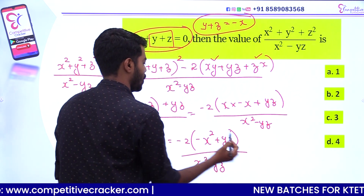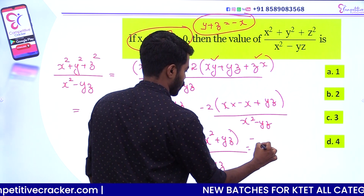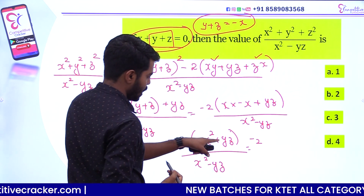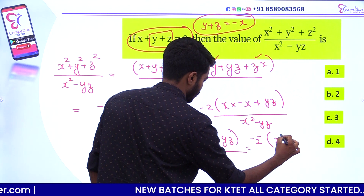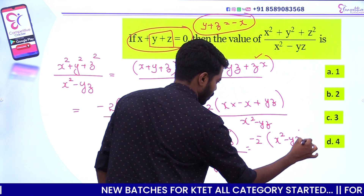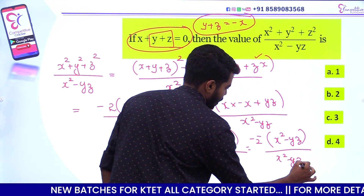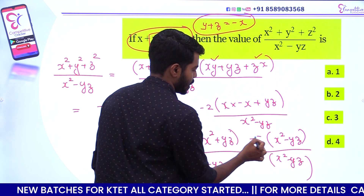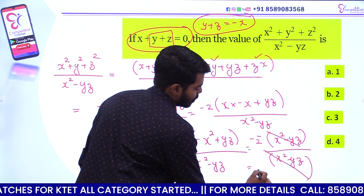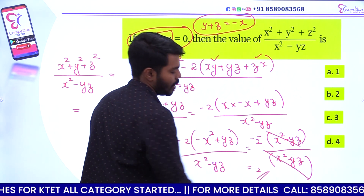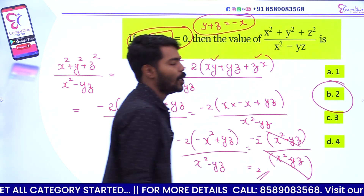That is the value of x, that is minus 2 here. If you want to add this one, it is x² minus yz. If you want to add this, we will get the value of 2. That is option B: 2.